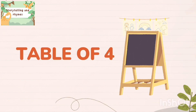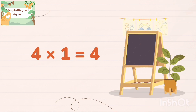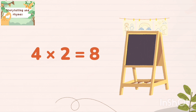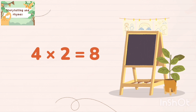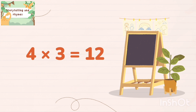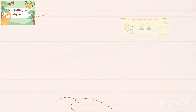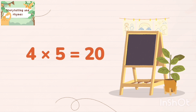Table of 4: 4 one's are 4, 4 two's are 8, 4 three's are 12, 4 four's are 16, 4 five's are 20.